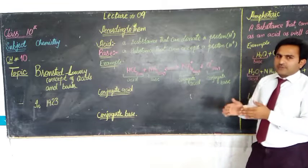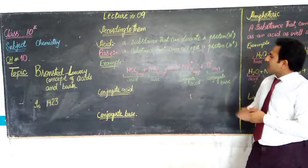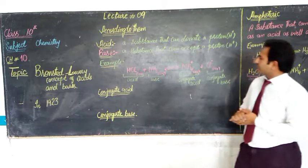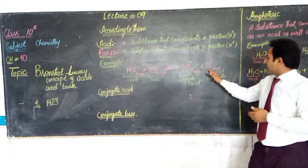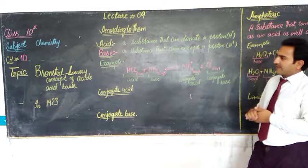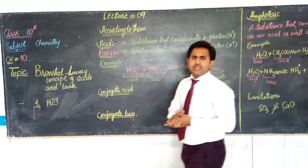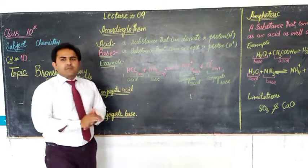If we start with conjugate base, which means when an acid donates a proton. Then we can see HCl becomes Cl- as the conjugate base.